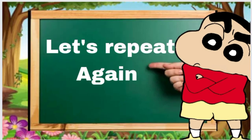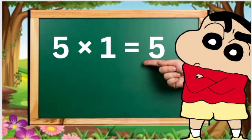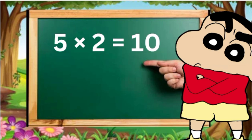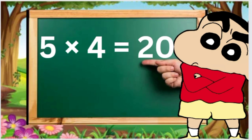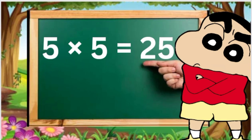Let's repeat again. 5 1s are 5, 5 2s are 10, 5 3s are 15, 5 4s are 20, 5 5s are 25.